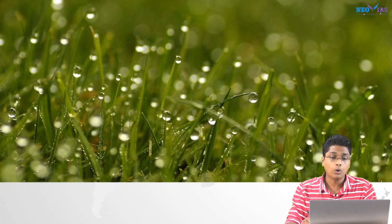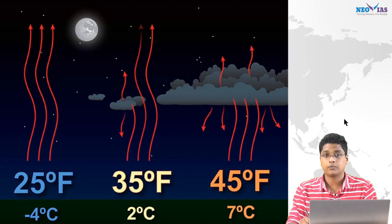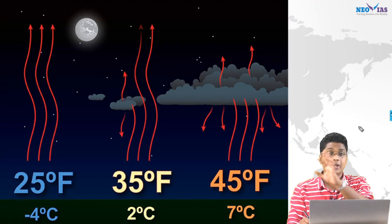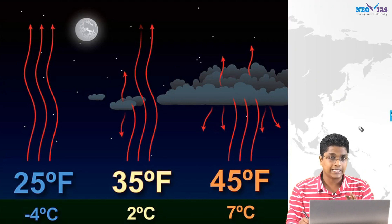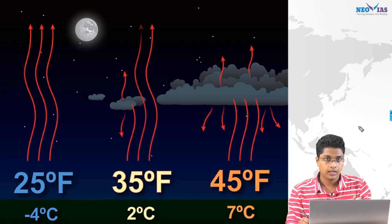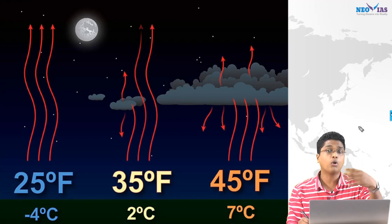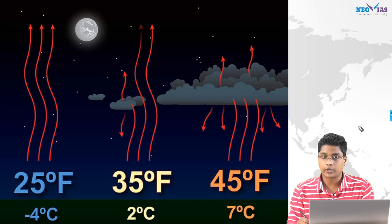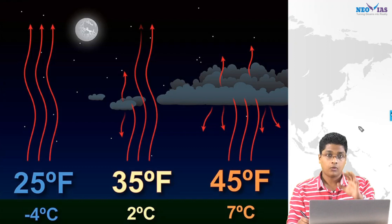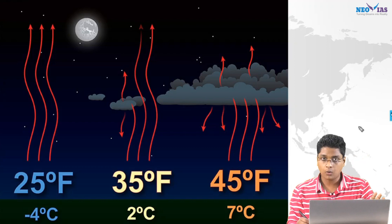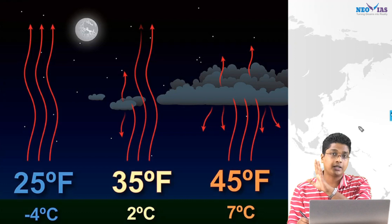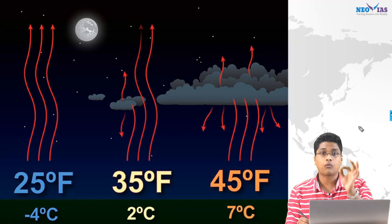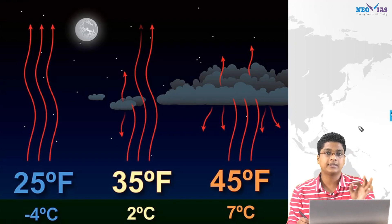Now let's look at what's happening during a cloudy night. If you observe, when it is cloudy at night but not raining, it feels warmer. Cloudy nights are warmer. During daytime, clouds reduce the temperature — the incoming sunlight is reflected by the top portion of the clouds. But during nighttime, the clouds reflect back the heat given off by the earth — the terrestrial radiation given off by the earth is reflected back by the clouds. This is why during cloudy nights, we feel warmer.